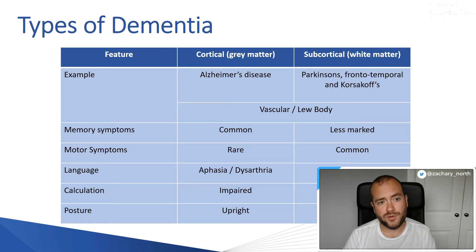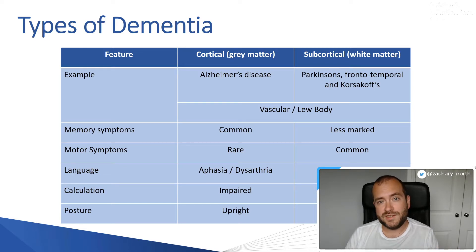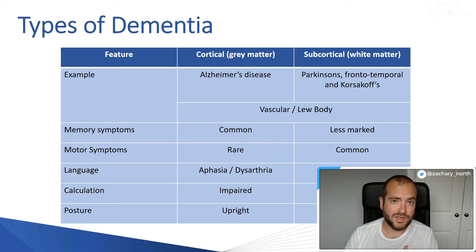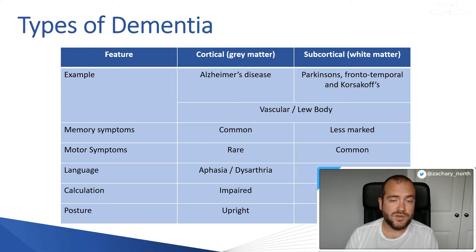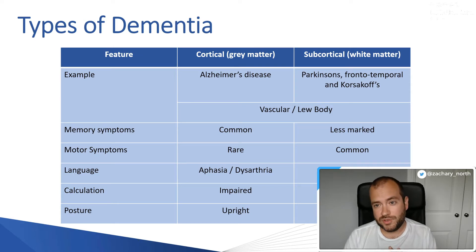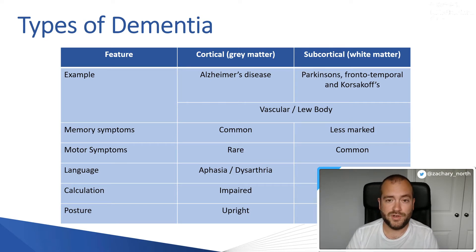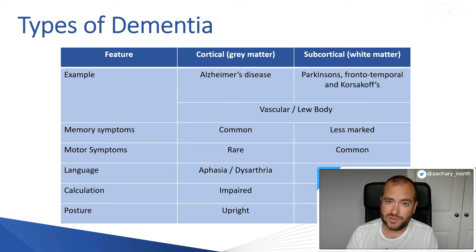A typical example of a cortical dementia is Alzheimer's disease, which is very prevalent. It typically presents initially with a reduction in memory — people can't remember recent things, their short-term memory goes. You then see difficulty perceiving the area around them, problems with language comprehension, hallucinations or psychosis, and emotional and personality changes that can be quite distressing to relatives.